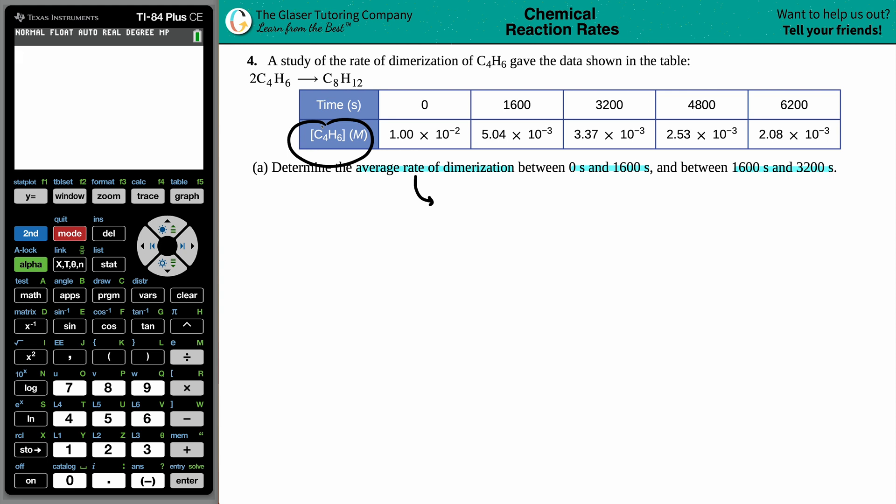So they did give us a concentration value, and they gave us a time. A rate is the change, that triangle means change, the rate is equal to the change in your concentration. And in this case, it's C4H6 divided by some type of change in time.